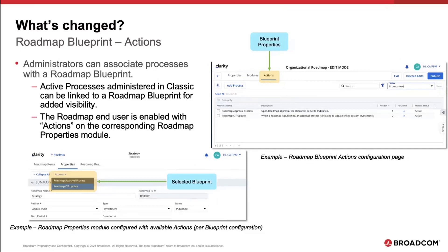With the configuration in place, the roadmap end user has an actions button on the corresponding roadmap properties page. This is an example of a roadmap approval process that can be initiated by the end user. I'm not going to go into details about actions as the feature was covered yesterday, but I simply wanted to bring it to your attention in the context of roadmap blueprinting.